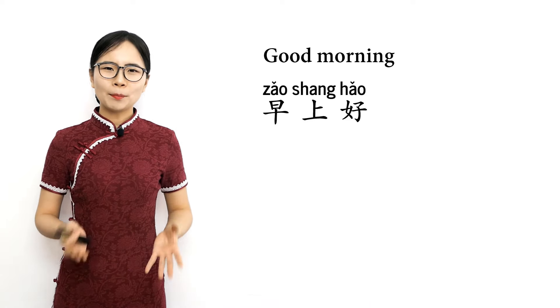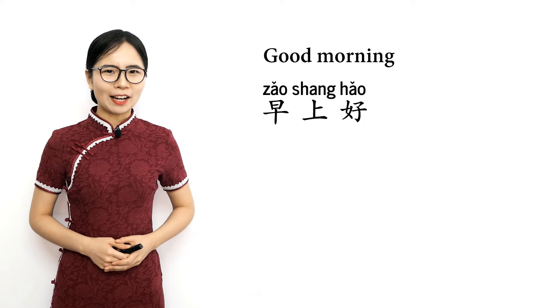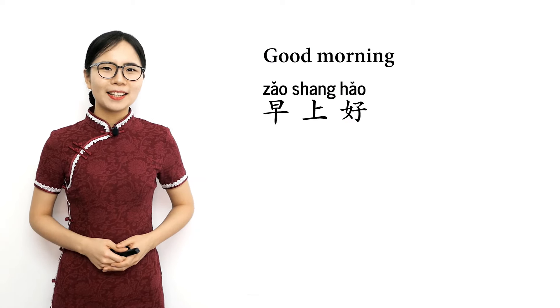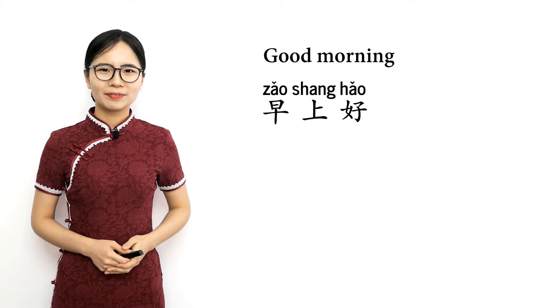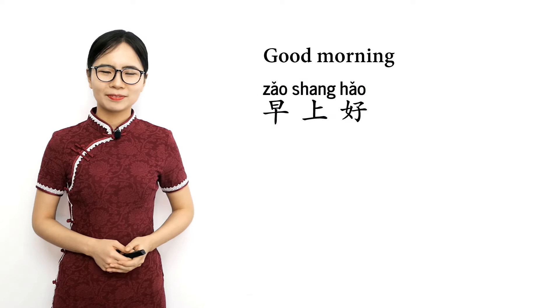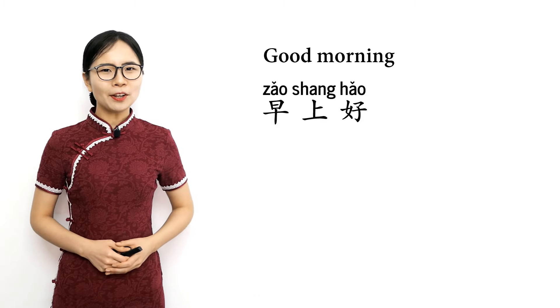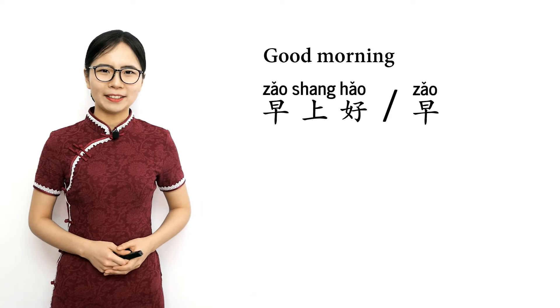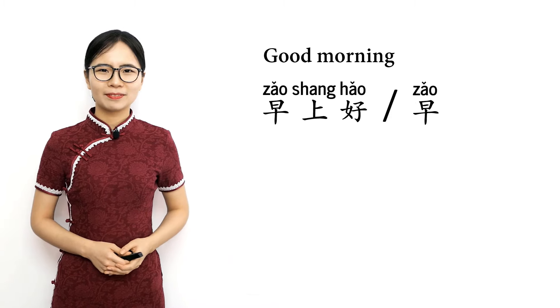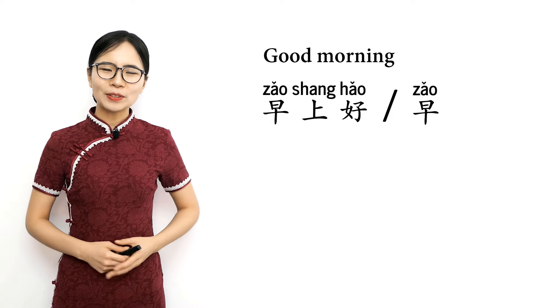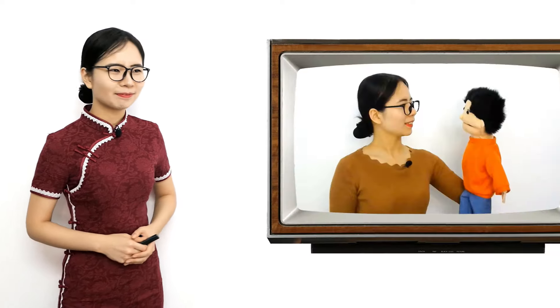When you see someone in the morning, you can greet them by saying 早上好. 早上 means morning and 好 means good, so 早上好 means good morning. Please repeat after me: 早上好, 早上好 — good morning. 早上好 is a polite way of saying good morning. You can also just say 早 as a more casual way. When people say 早上好 or 早 to you, say it back. 早上好 — good morning. 早 — morning.